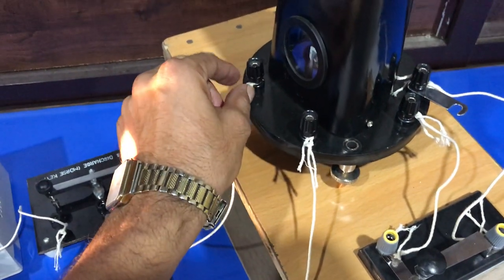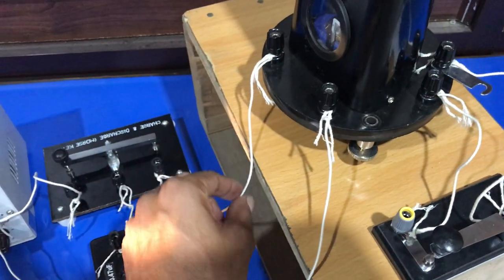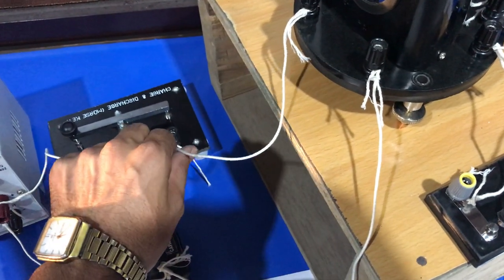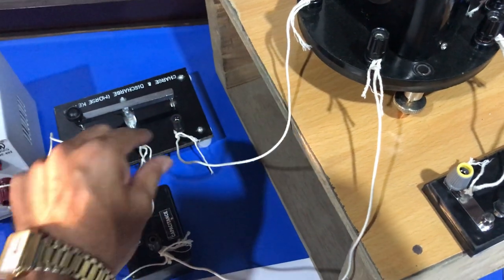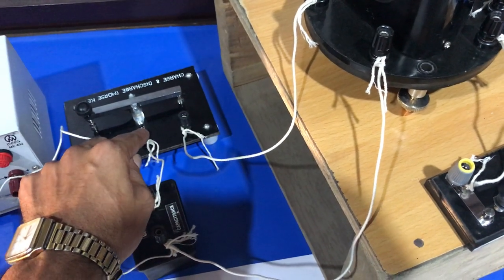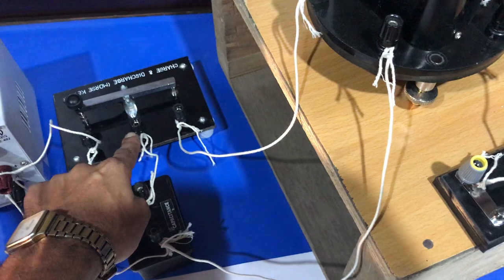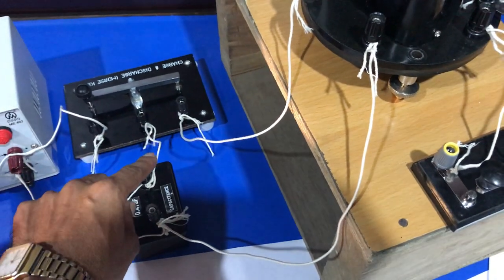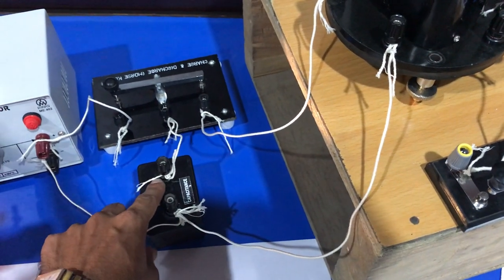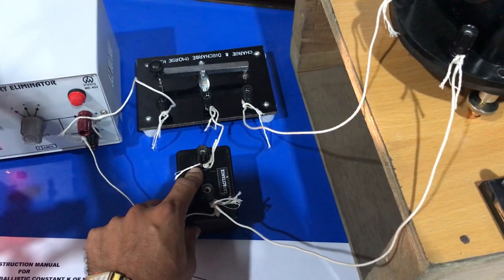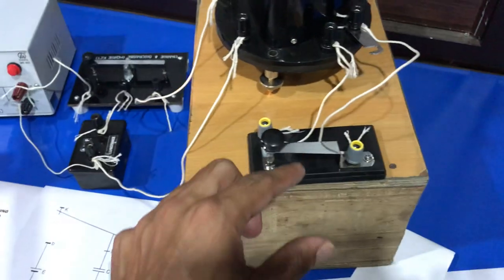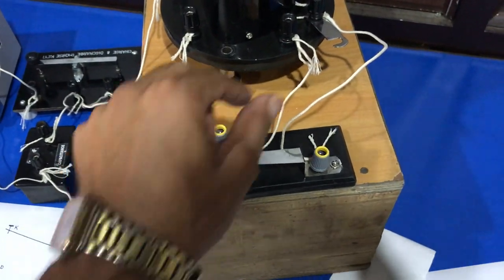The second end of the ballistic galvanometer is connected to the A point of Morse key, and the middle point or point B of Morse key is connected to the second point of standard capacitor. The tapping key is connected here.